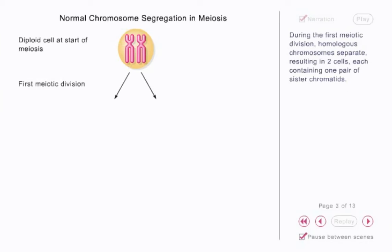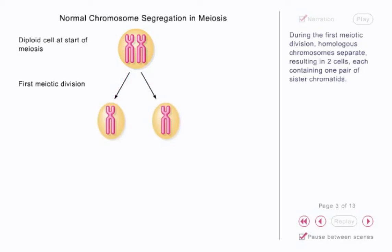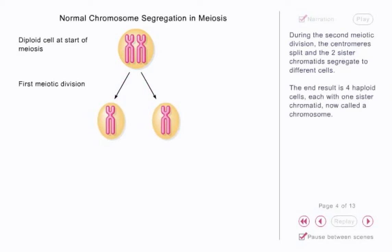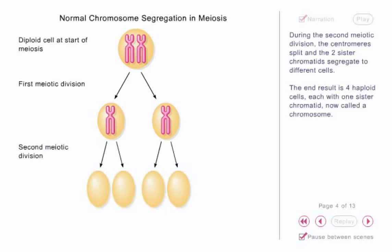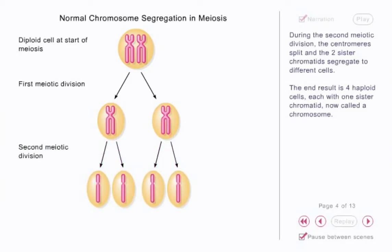During the first meiotic division, homologous chromosomes separate, resulting in two cells, each containing one pair of sister chromatids. During the second meiotic division, the centromeres split and the two sister chromatids segregate to different cells. The end result is four haploid cells, each with one sister chromatid, now called a chromosome.